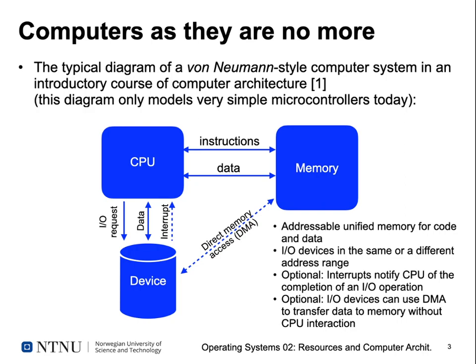We also have optional components. The first one is interrupts — a device can tell the CPU whenever an IO request that was started some time ago has finished. Additionally, we have DMA, or direct memory access, which means that a device can transfer data, for example reading from a device, directly into memory without going through the CPU first. This enables you to leave the CPU free for other tasks while DMA is happening in the background.